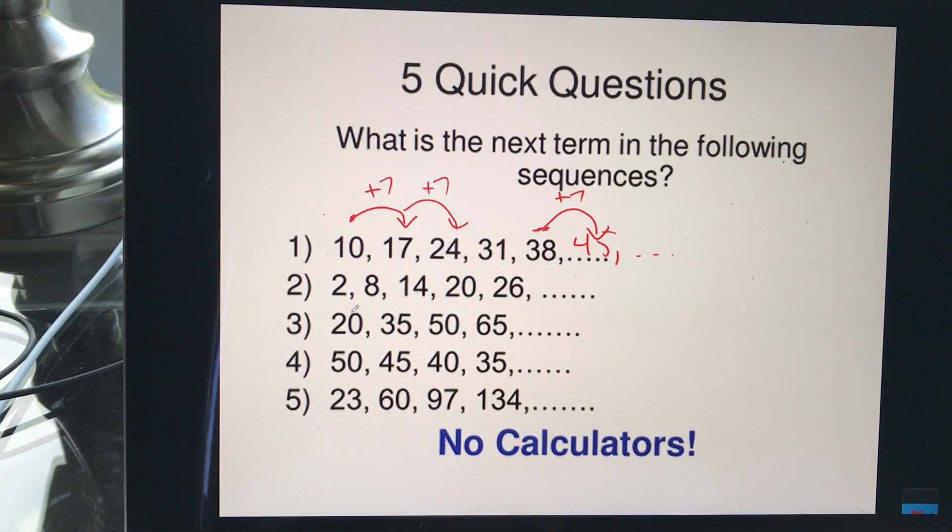This one here, 20. How much do you add to get to 35? 15. How much do you add here? 15. So however much we're adding, 65 plus 15 plus 15 would be 80. And so on.